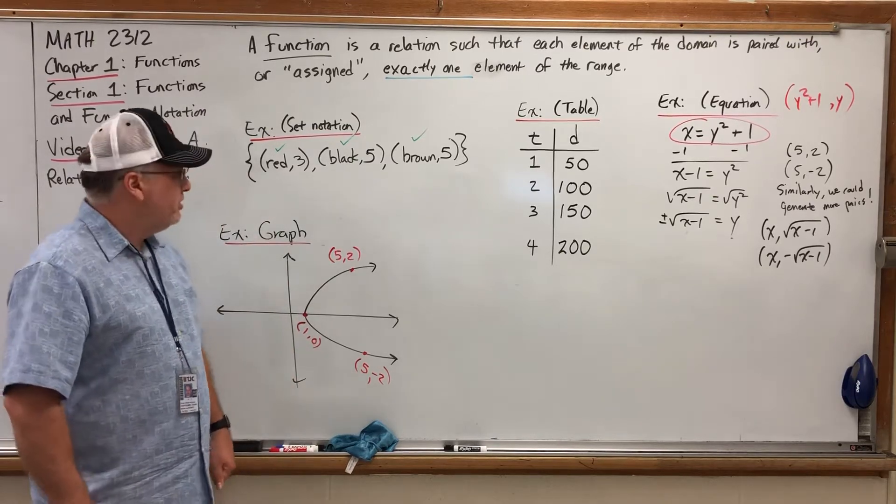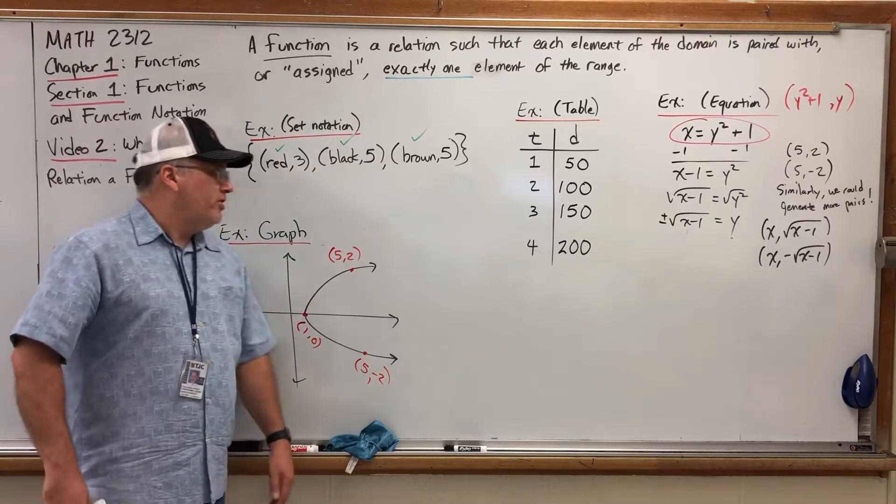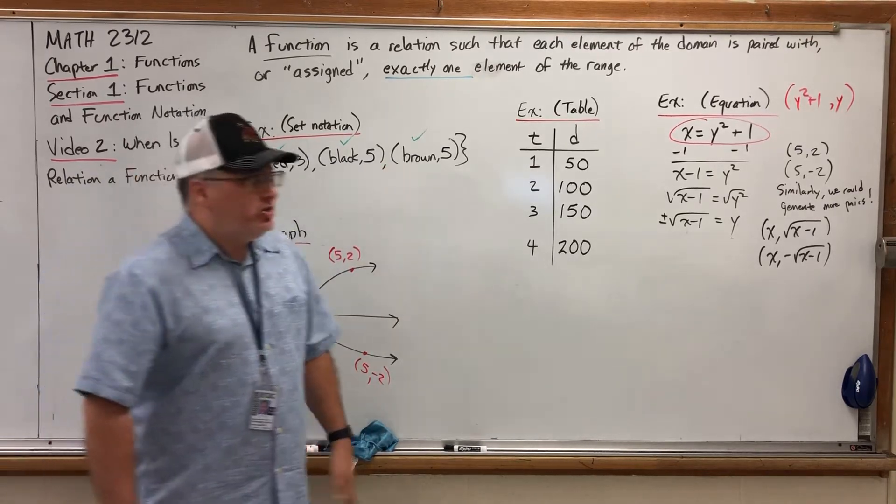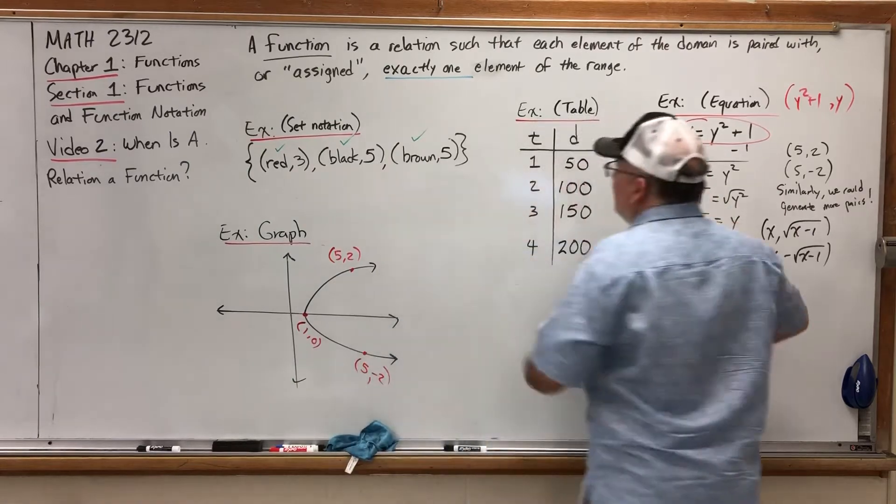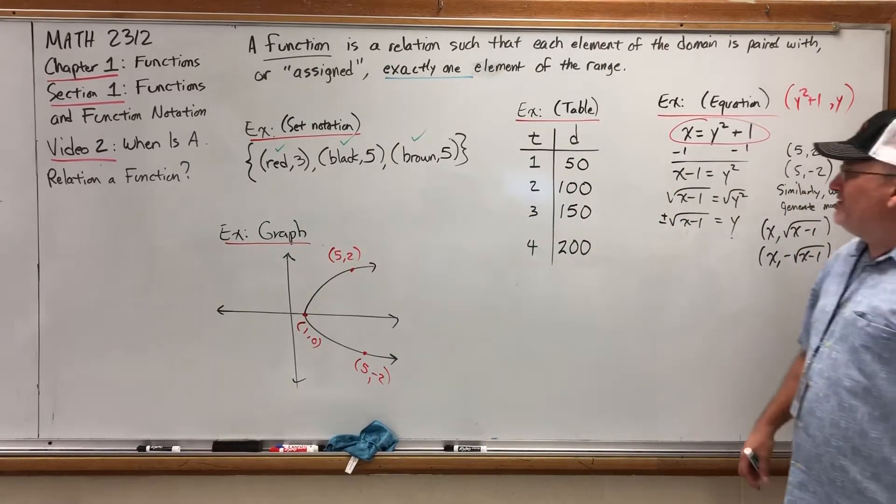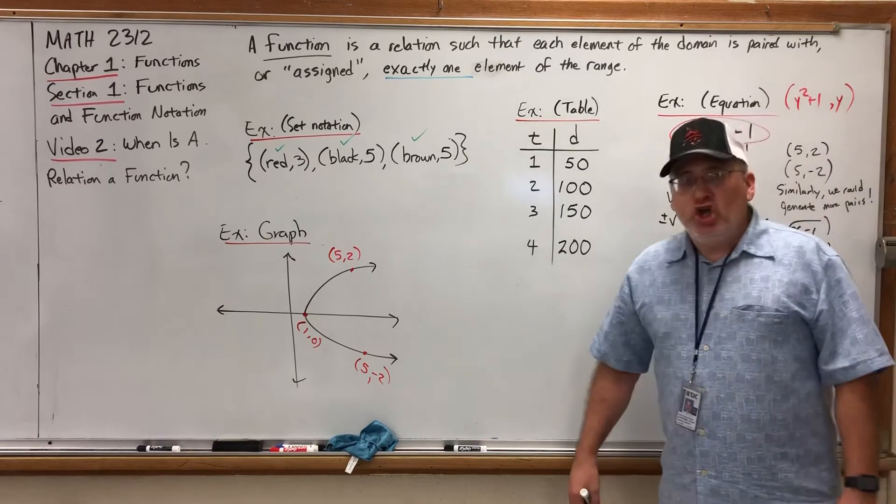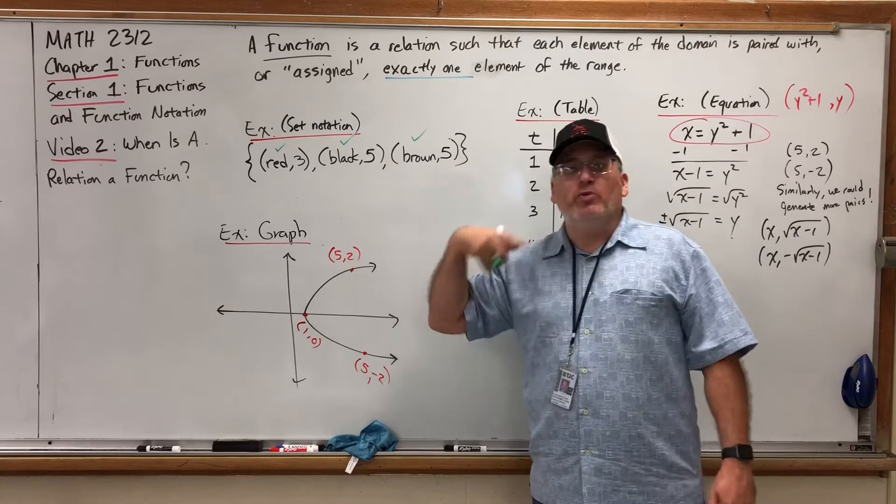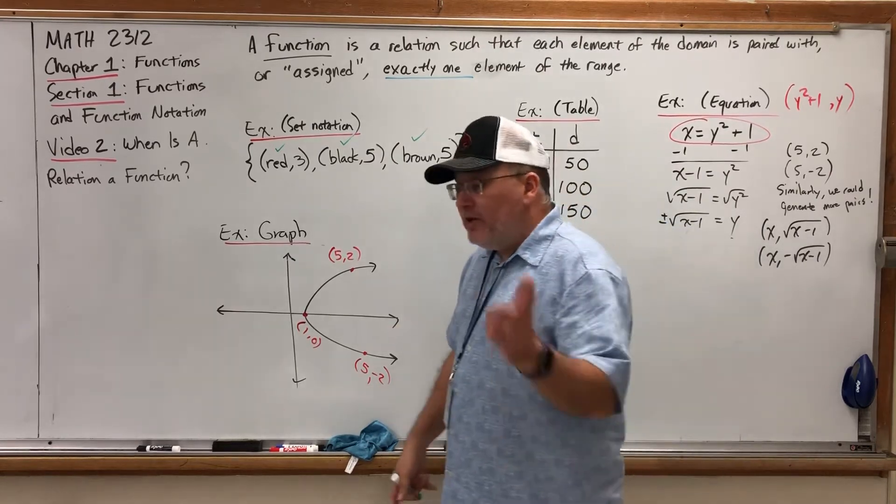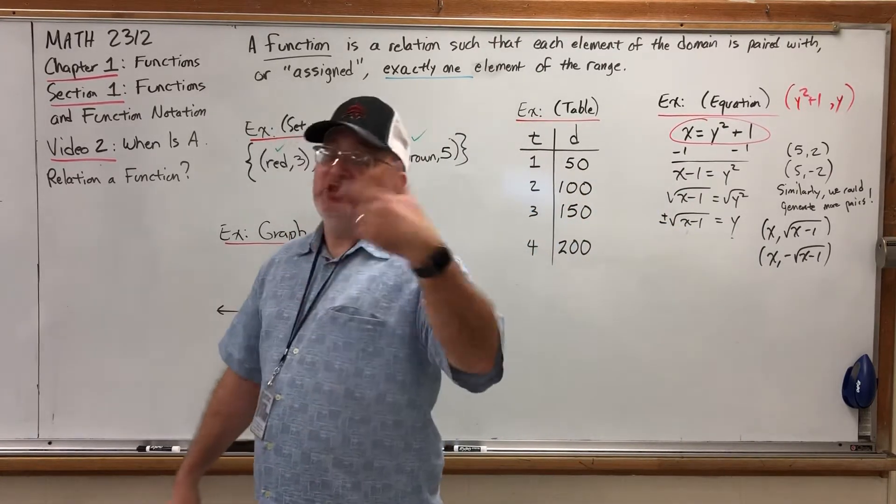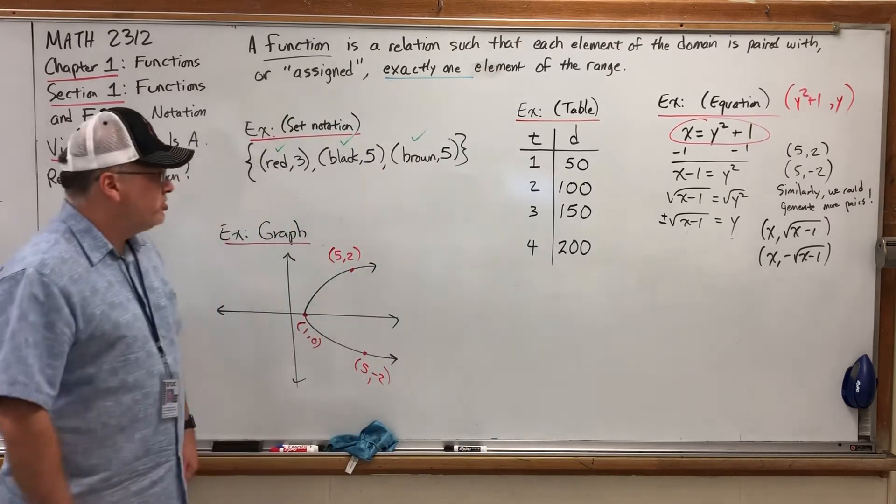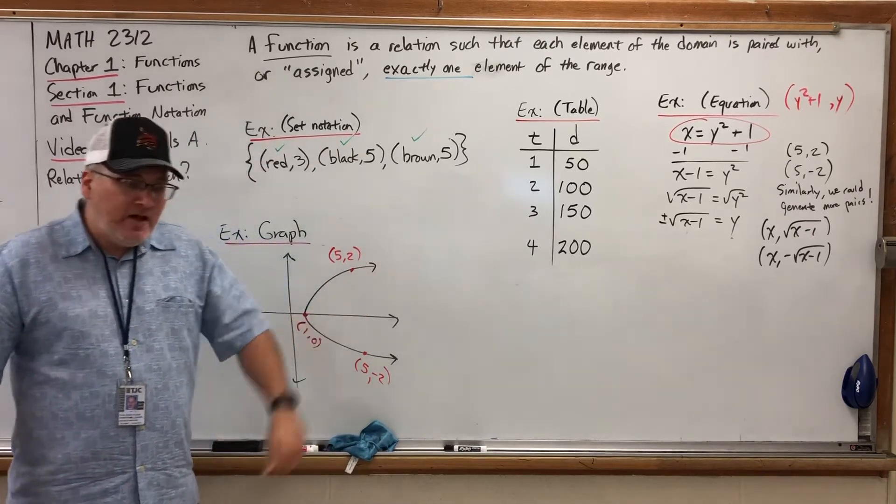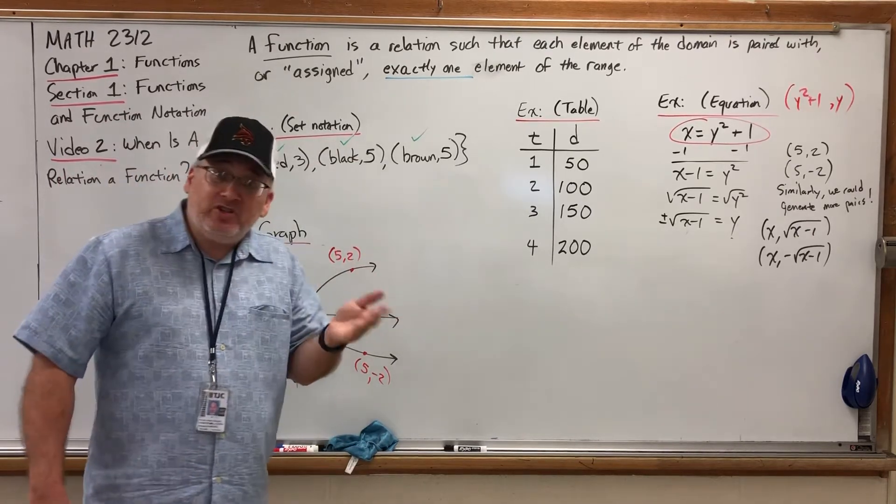This is a function. Where some people struggle with is the fact that black and brown are both paired with the same value from the range. Doesn't that contradict the definition about each element of the domain being paired with exactly one element of the range? No.